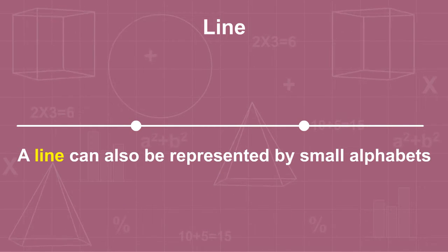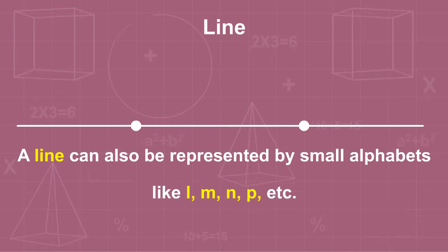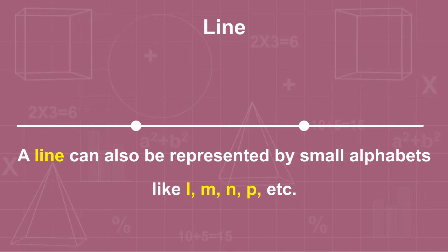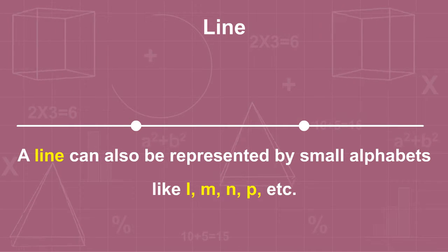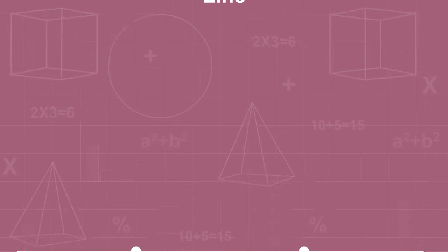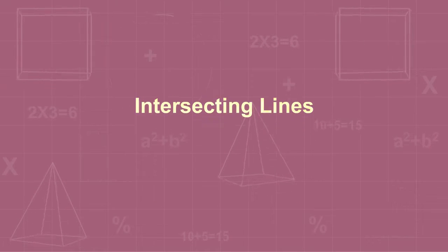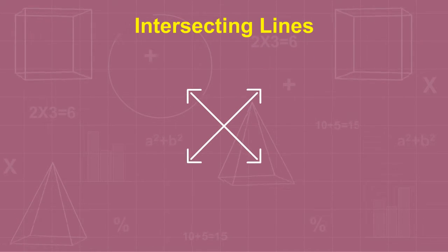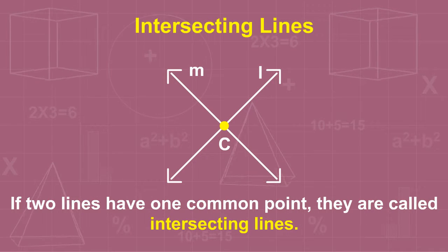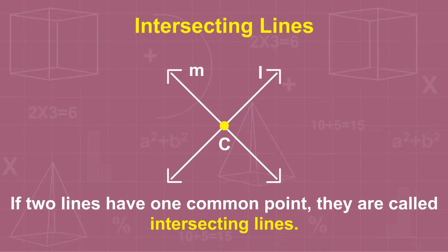A line can also be represented by small alphabets like L, M, N, P, etc. If two lines have one common point, they are called intersecting lines.